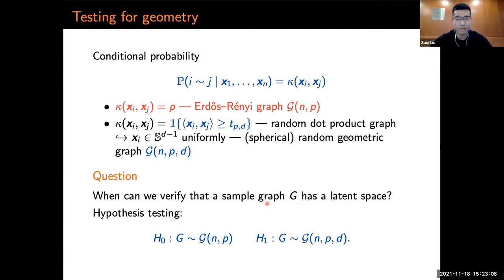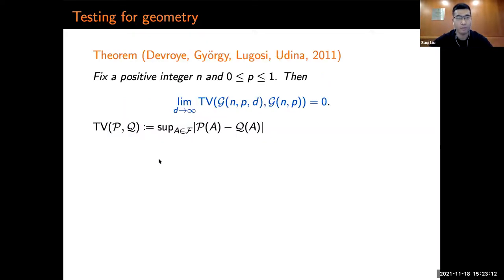This question has been particularly studied for G(n,p,d) in previous work. In the seminal work of Diaconis et al. in 2011, they show the following theorem. When the dimension goes to infinity, G(n,p,d) becomes close to G(n,p) in total variation distance.